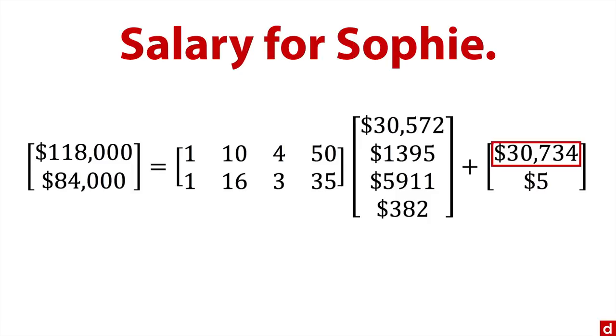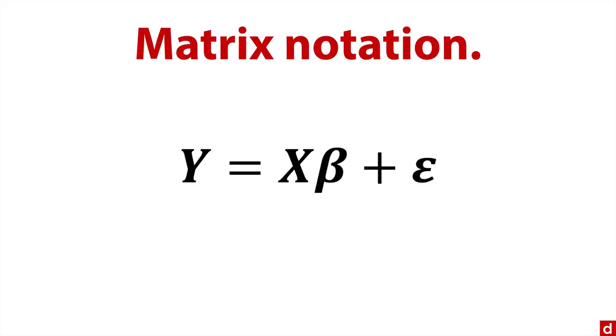But what's neat about matrix algebra or linear algebra is that you can use matrix notation. And this means the same stuff. And what we have here are these bolded variables that stand in for entire vectors or matrices. So for instance, this Y, a bold Y, stands for the vector of outcome scores.